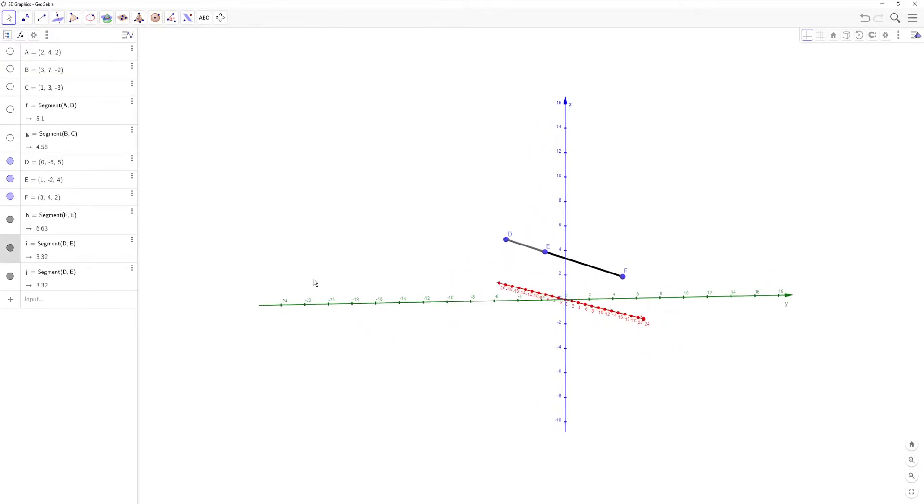And also, you can make the connection that we multiply DE by 2 to get EF. And you can see that DE times 2 equals EF. And same with the magnitude. Because look, over here we have the magnitude of DE, which is 3.32. And the magnitude of FE or EF, which is 6.63. So just multiply by 2 and you get that. So that's a cool connection.